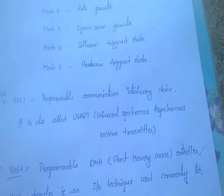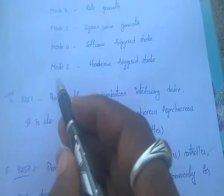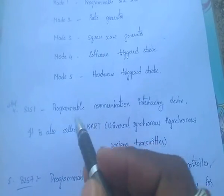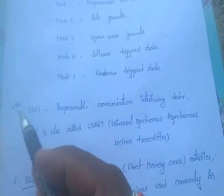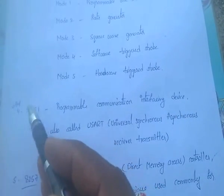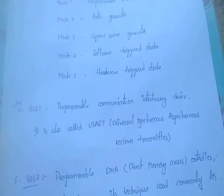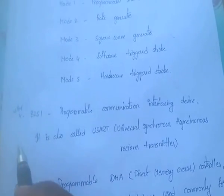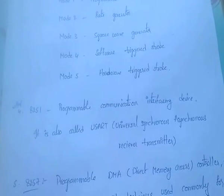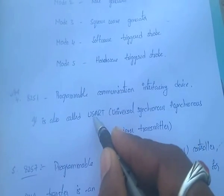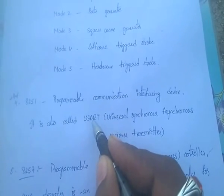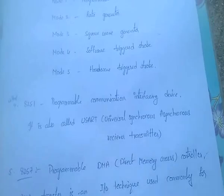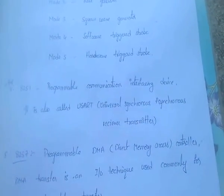Next interfacing device is 8251. It is a programmable communication interfacing device. It is also called USART — Universal Synchronous Asynchronous Receiver Transmitter. This is the 8251; it is a communication interface.